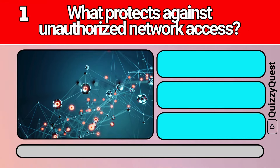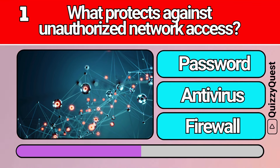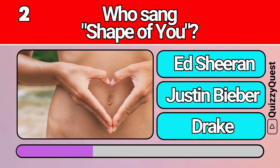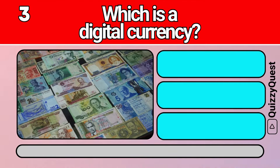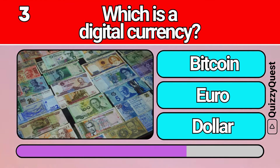What protects against unauthorized network access? Who sang Shape of You? Which is a digital currency? What manipulates matter on an atomic level? What creature is associated with Loch Ness?